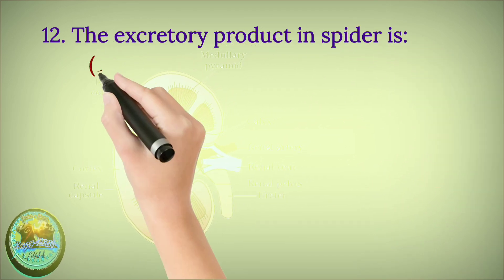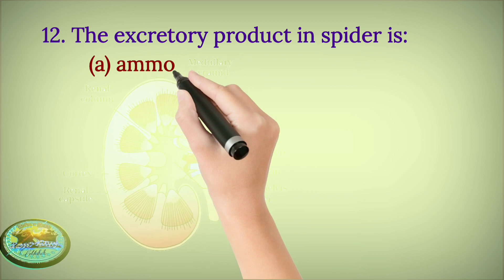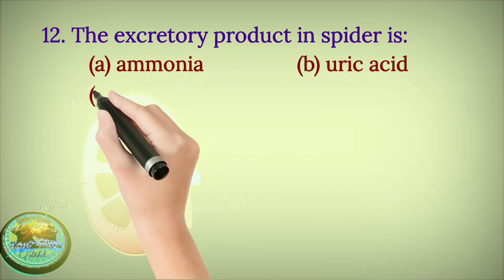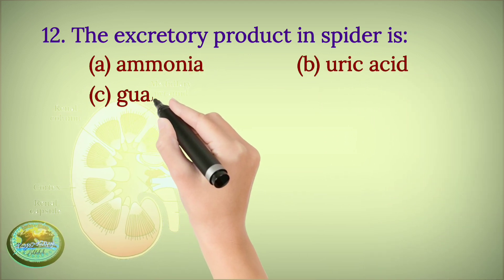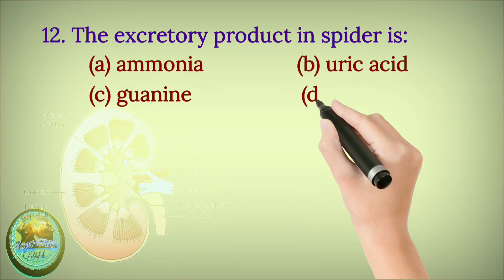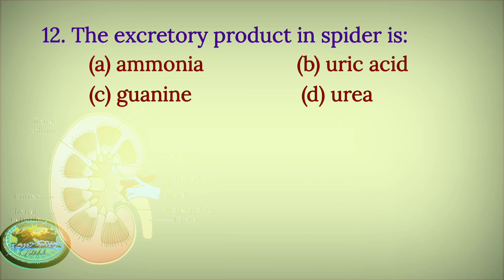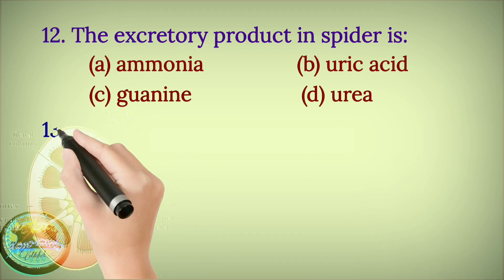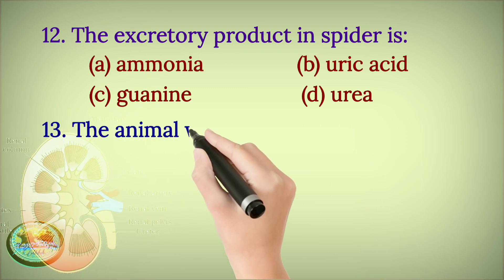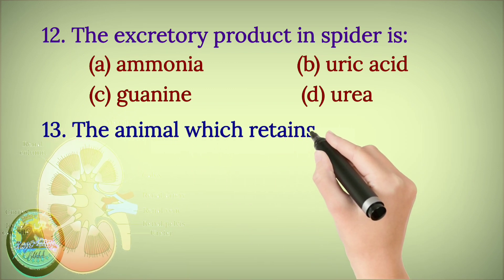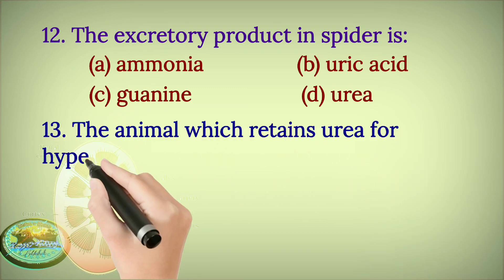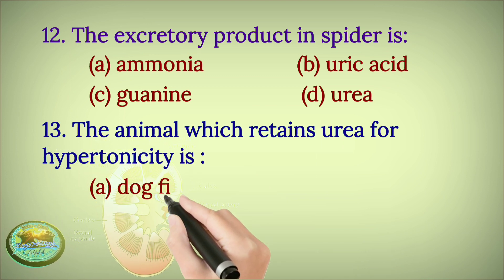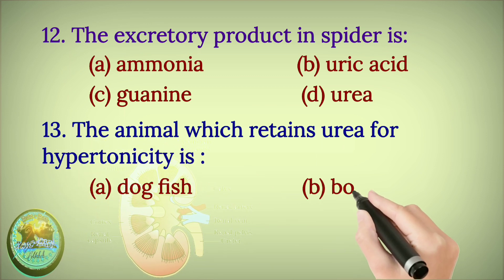Question 12: The excretory product in spider is — ammonia, uric acid, guanine, or urea?